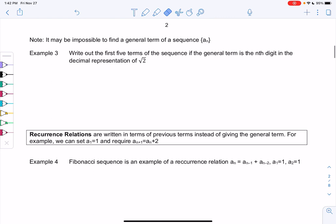An example would be a sequence if the general term is the nth digit of the decimal representation of square root 2. There won't be a nice formula for this one.